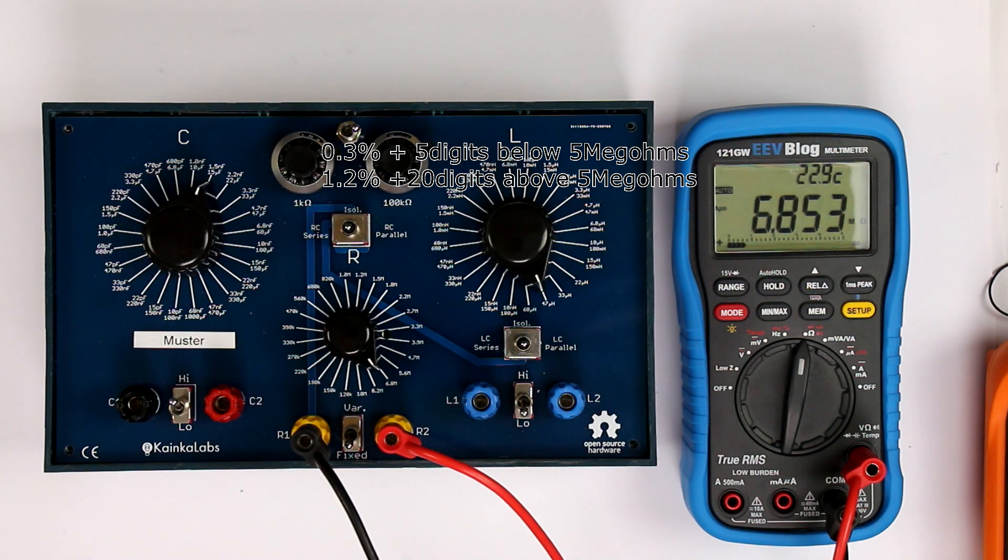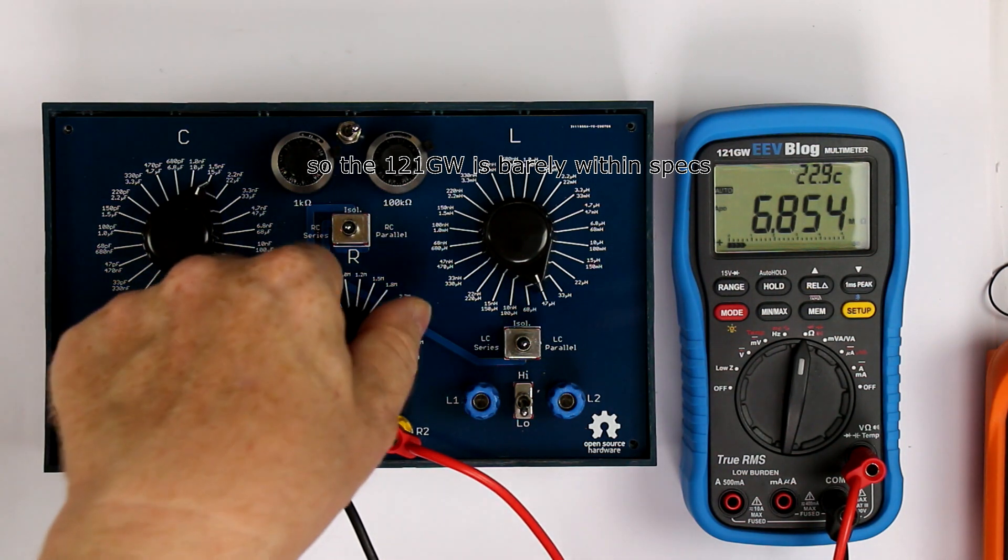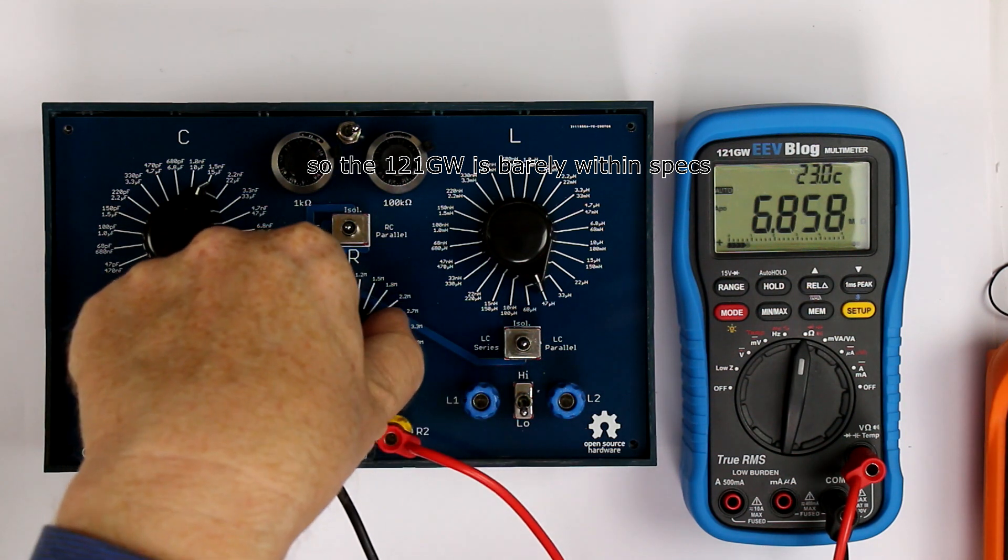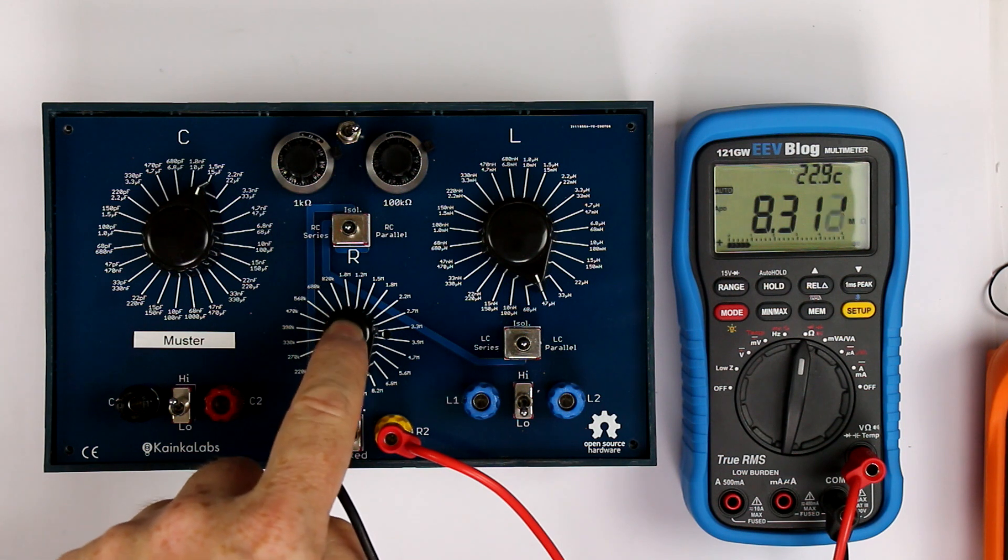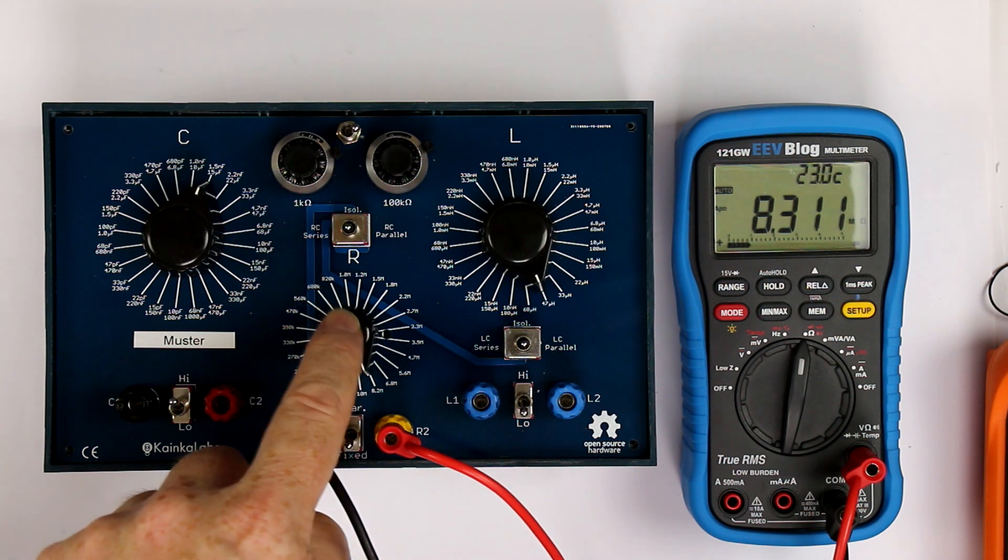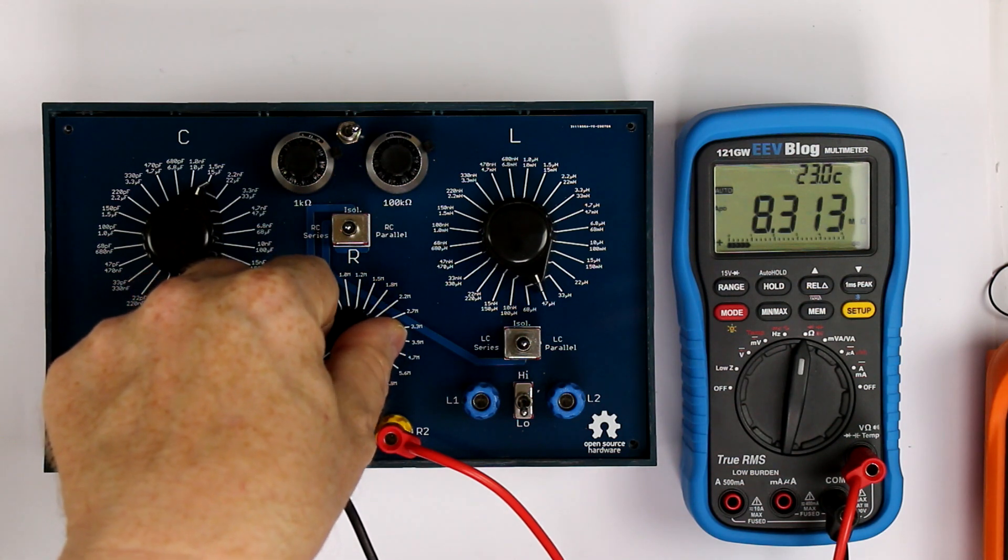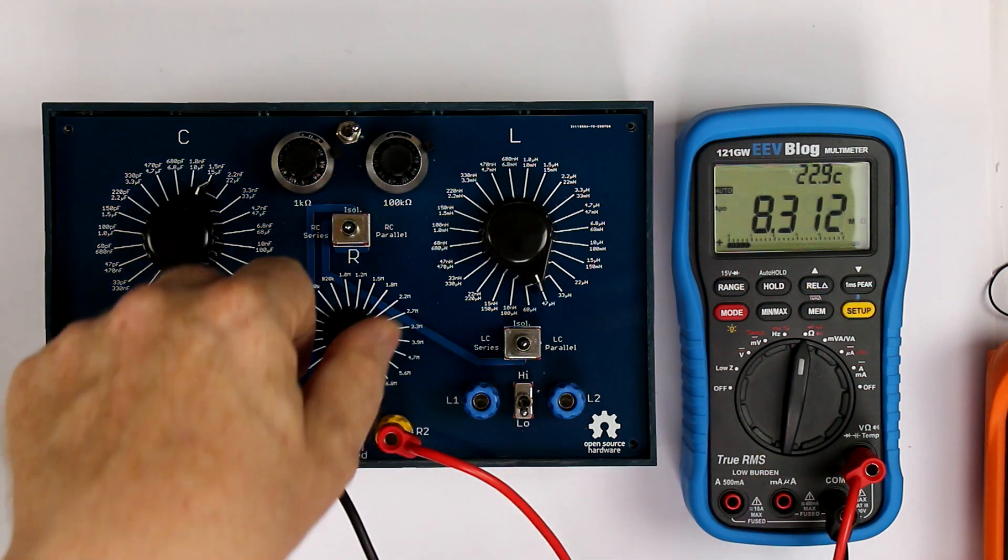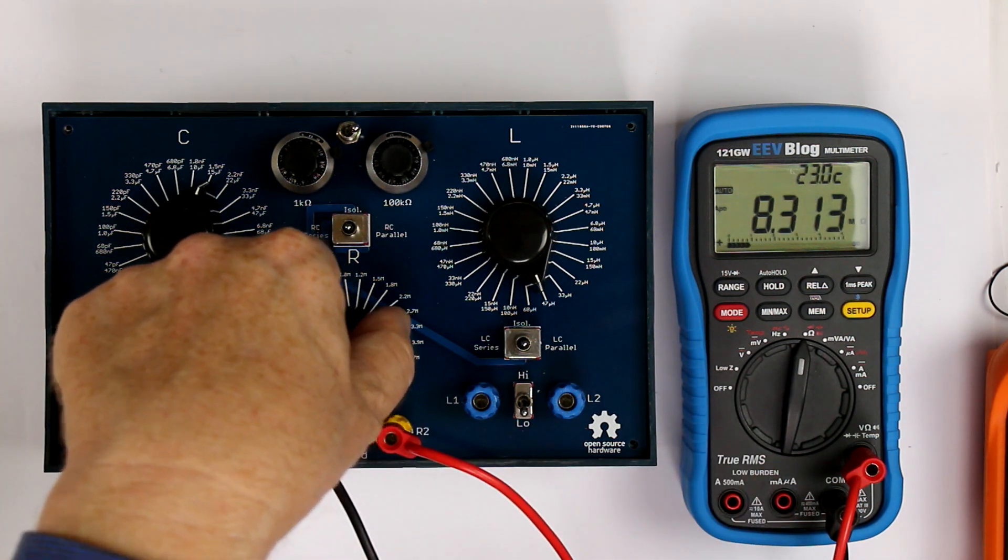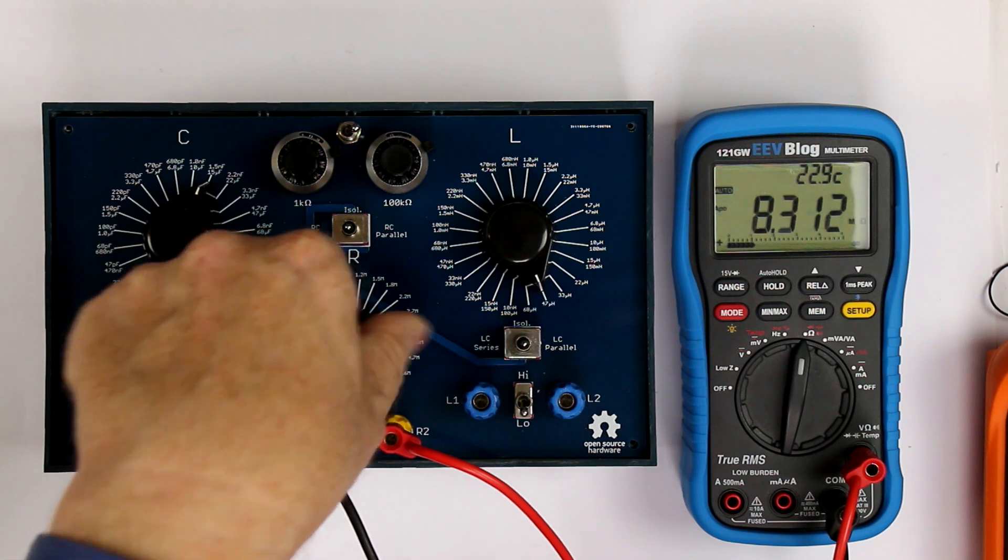Also the 6.8 meg are nearly 1% off, which was not the case with the X-Tech, and the 8.2 is now 8.3, and this is more than 1% off. So I think the highest resistance range, there's a measurement problem, or an accuracy problem.